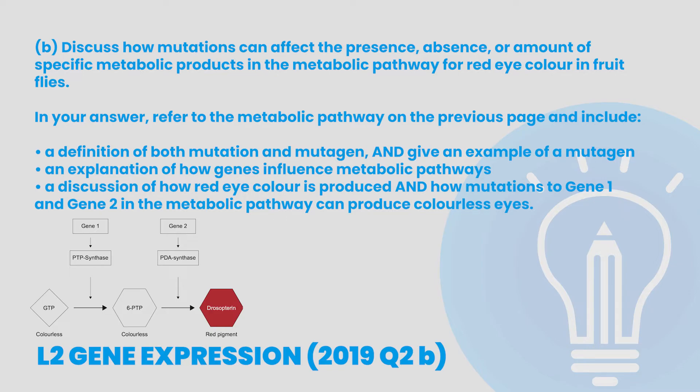Let's apply all of this in the context of a question from Level 2 Gene Expression from 2019. 'Discuss how mutations can affect the presence, absence, or amount of specific metabolic products in the metabolic pathway for red eye colour in fruit flies.' In your answer, refer to the metabolic pathway on the previous page and include: a definition of both mutation and mutagen, and give an example of a mutagen; an explanation of how genes influence metabolic pathways; and a discussion of how red eye colour is produced and how mutations to gene 1 and gene 2 in the metabolic pathway can produce colourless eyes.